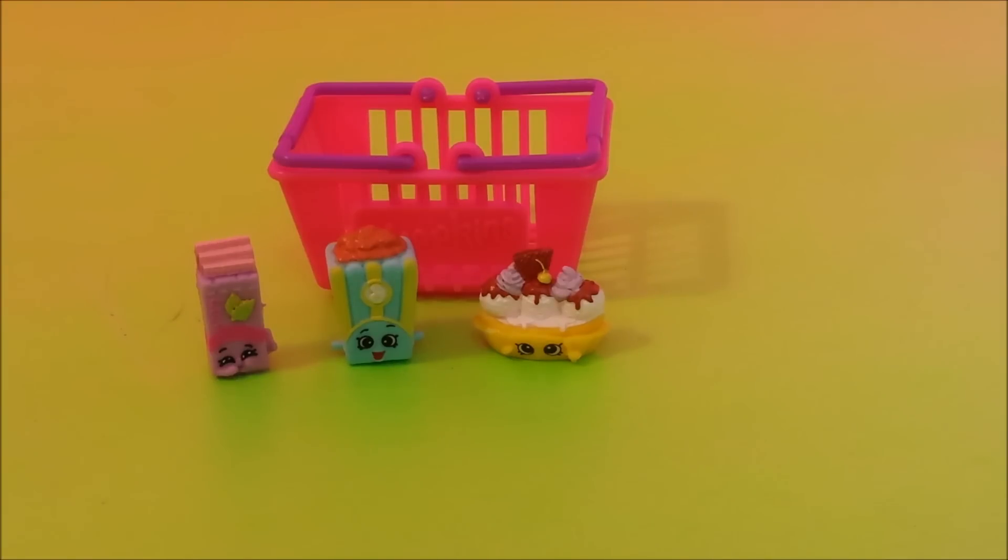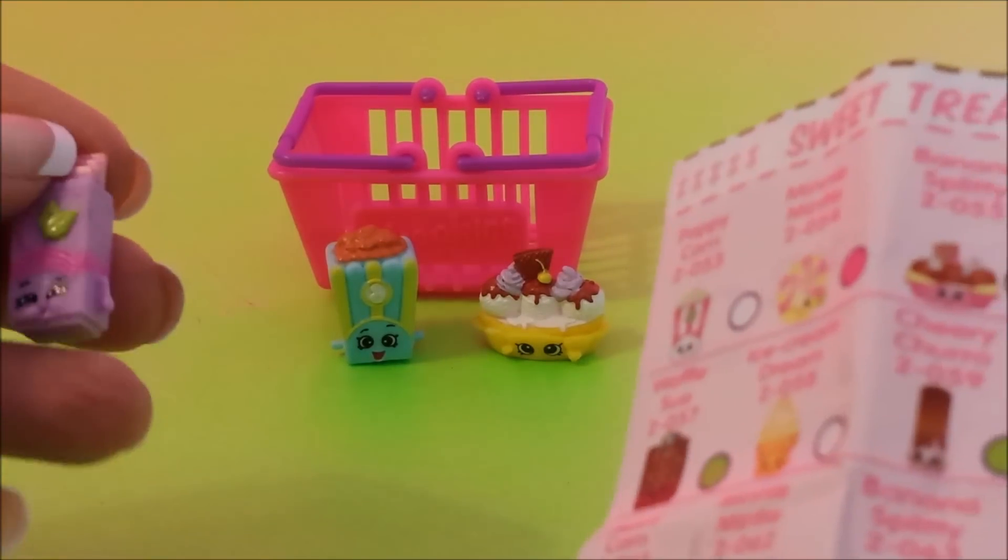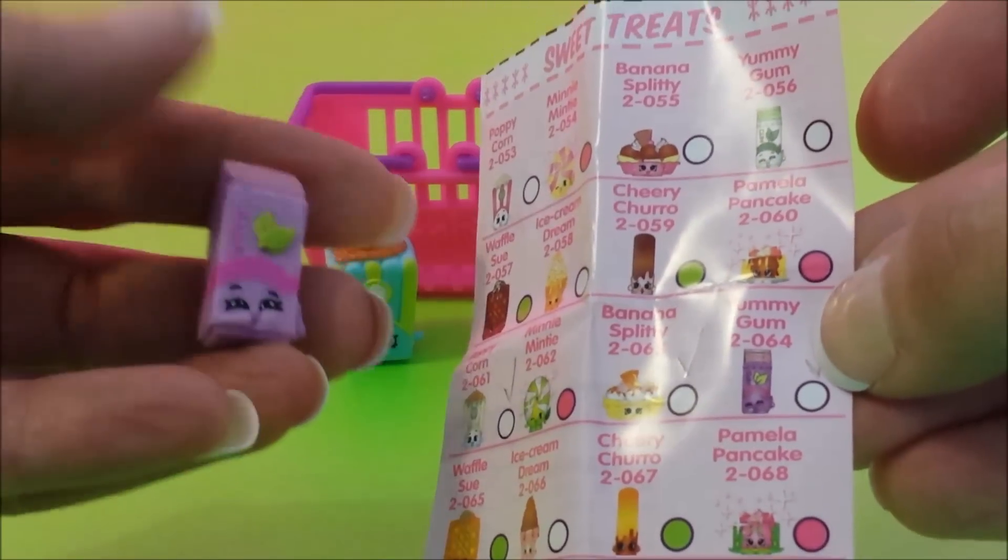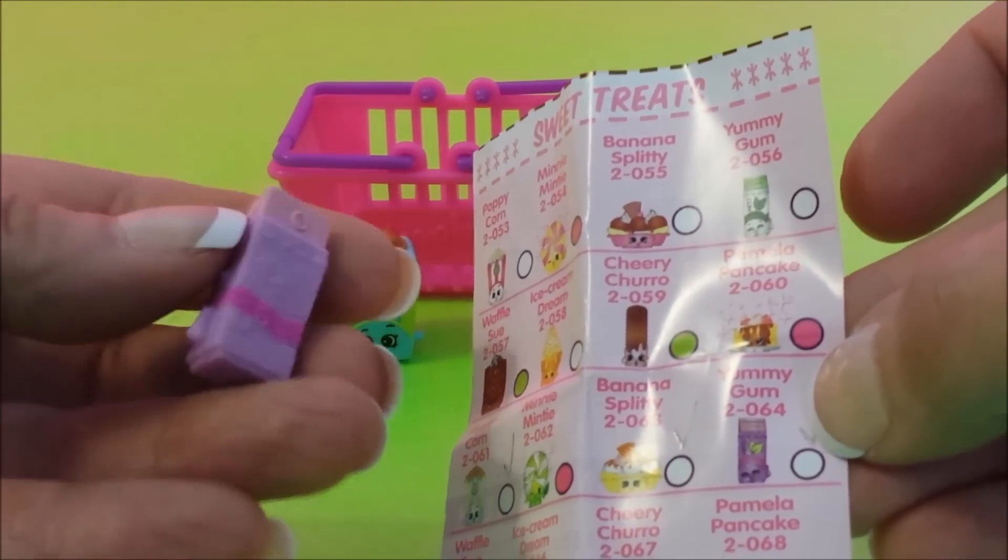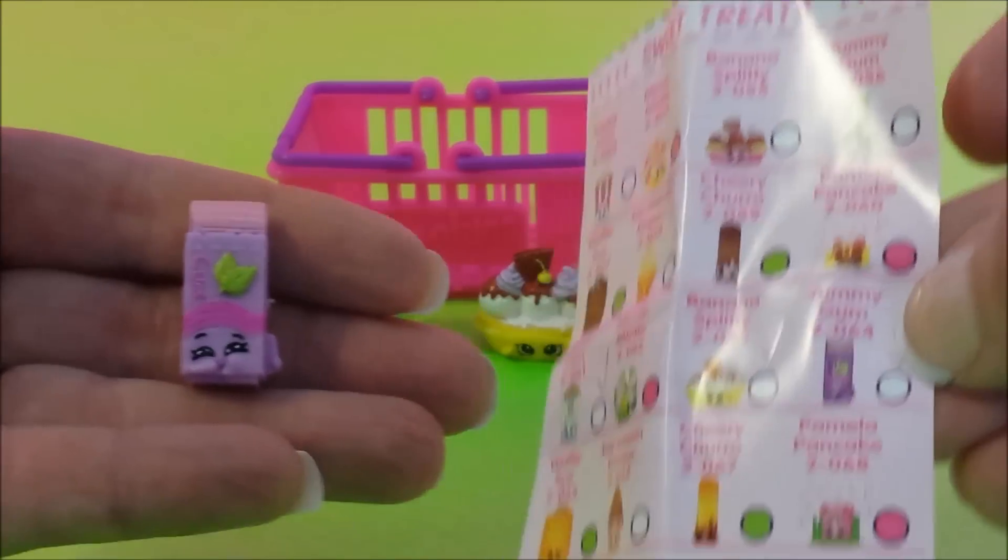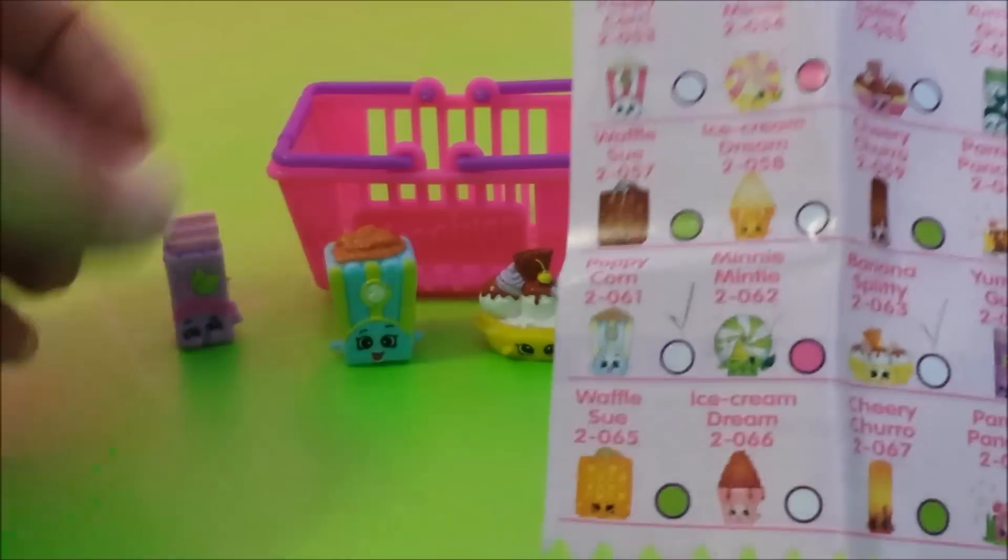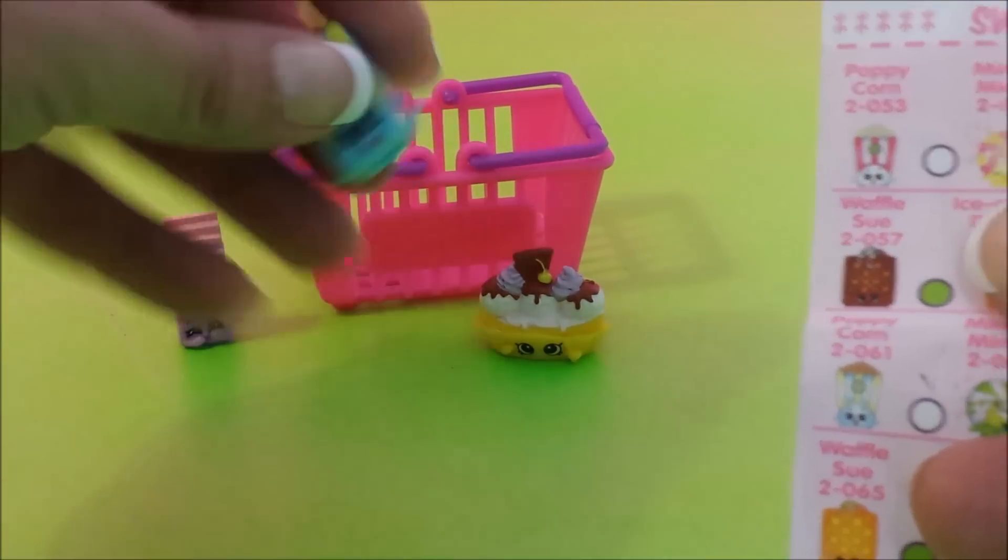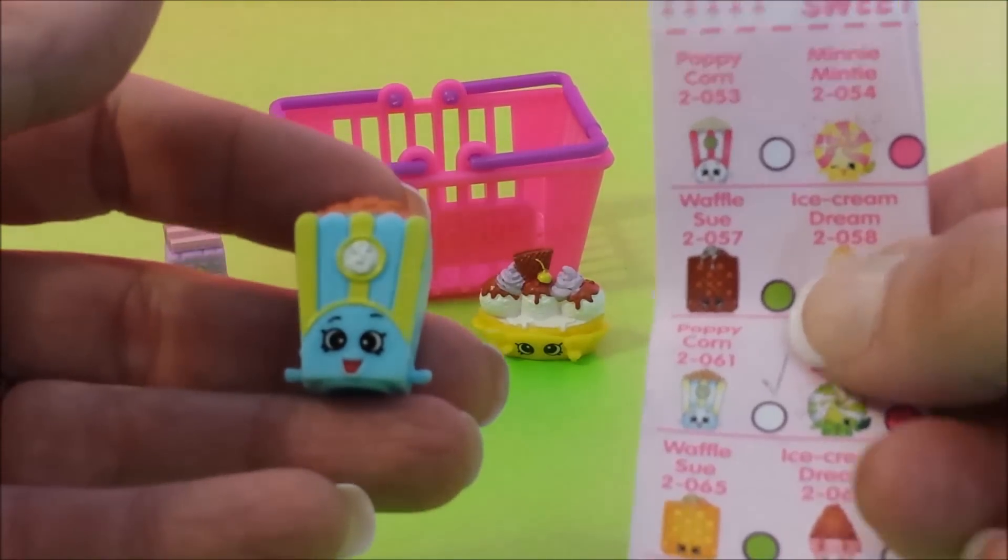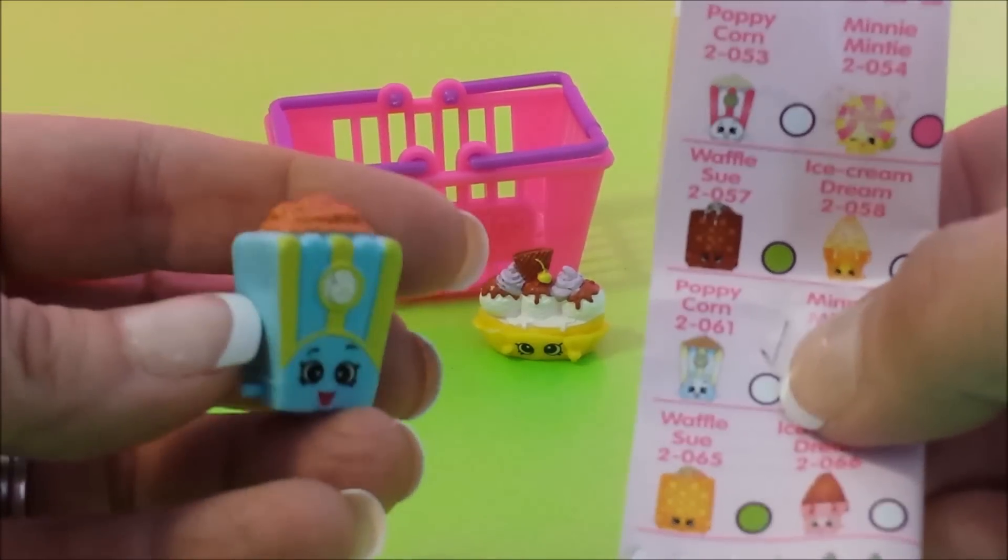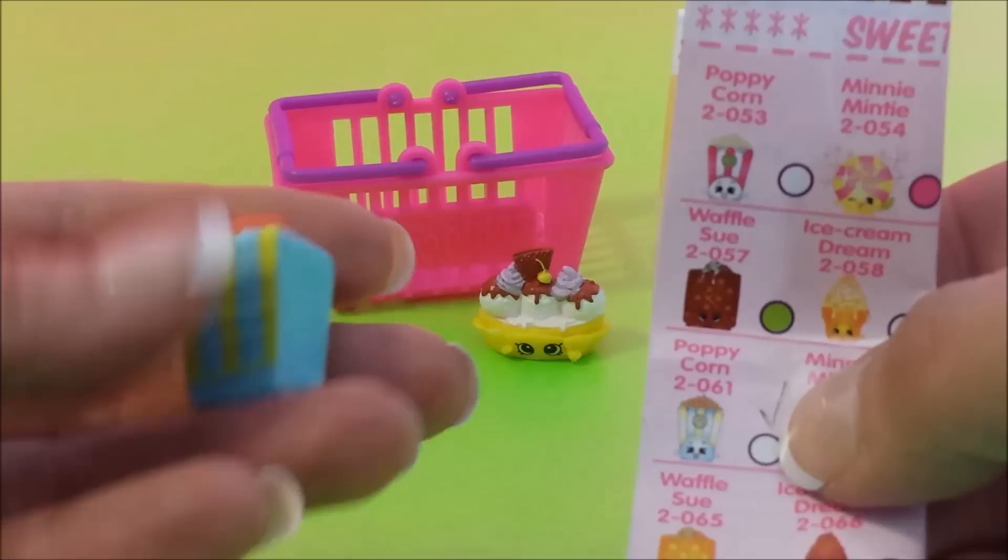Next basket up is from the sweet treats and we got three of the sweet treats Shopkins. The first one we got is Yummy Gum and Yummy Gum is a common. It's right here on the sheet for you so you can see. Here's Yummy Gum, very cute. The next one up is Poppy Corn. Poppy Corn is also a common. It's right here. I love their little faces, they look so cute and happy.